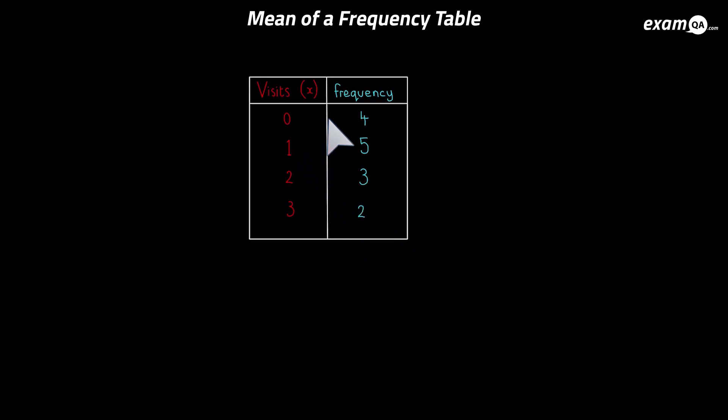So 0 has a frequency of 4. That means it's 4 lots of zeros. So if you had your values listed out, like in the first example, you'll just have 0 and then another 0 and another 0 and another 0. And that will be followed by 5 lots of ones. So you'll have 1, 1, 1 and so on, 5 of them. And the same with the other ones.